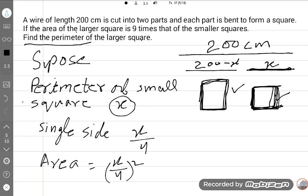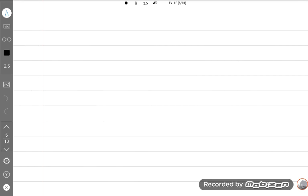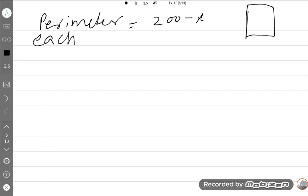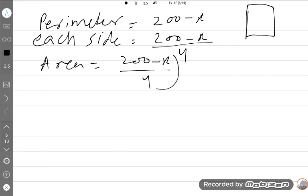Same. We will do the same thing with the larger square on the next page. So, larger square perimeter is equal to 200 minus x. Each side is 200 minus x upon 4. So, area is 200 minus x upon 4 square.